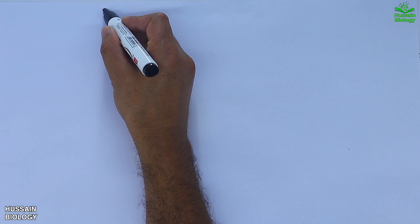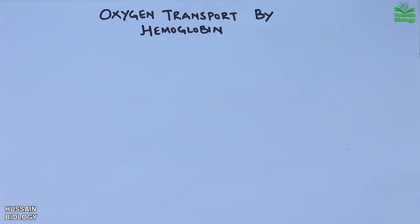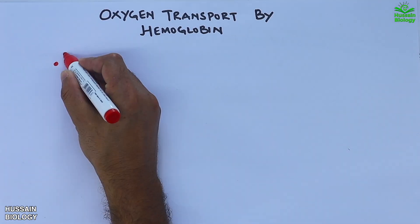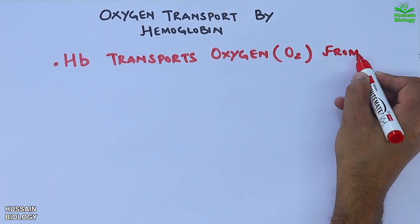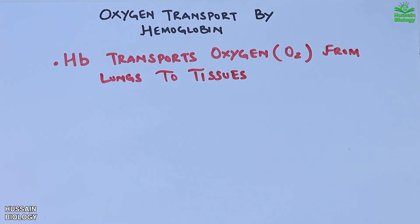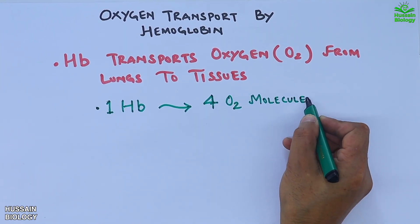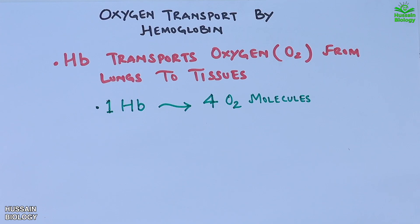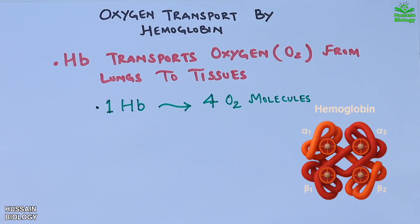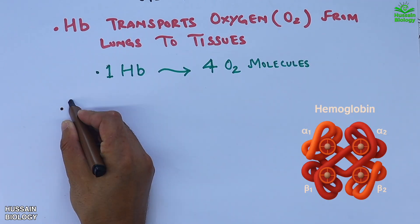This video is about oxygen transport by hemoglobin. We know the hemoglobin molecule transports oxygen from lungs to tissues. One hemoglobin molecule transports about four oxygen molecules.